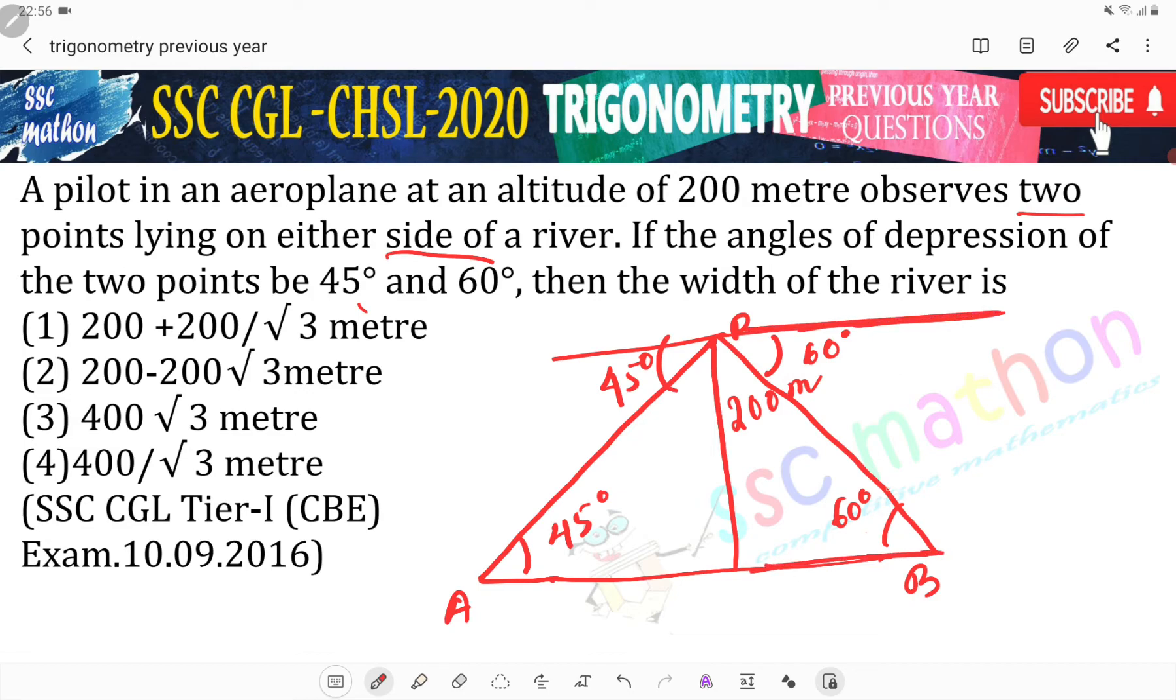And this is the interceptor. So that's why this is also 60 degree. Now look, what is given? Then the width of the river. We need to find this length.